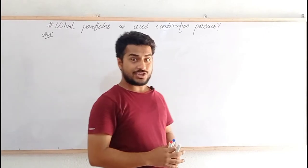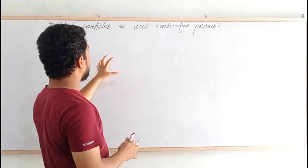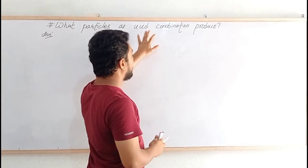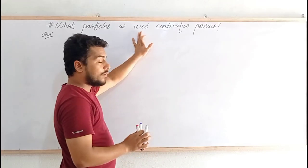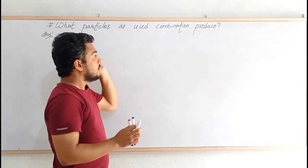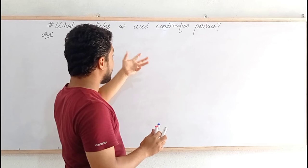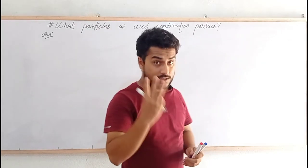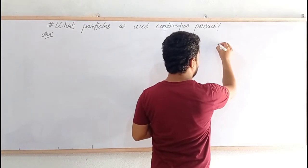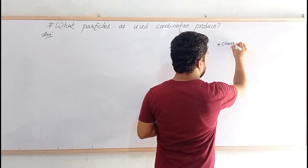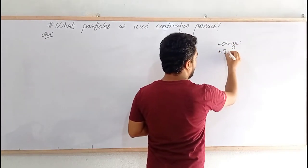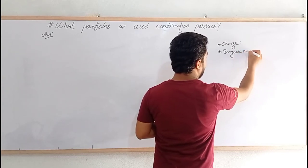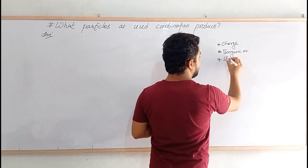So, we have a question over here. What particle is the UUD combination produced? Here, UUD represents up quark, up quark, and down quark. To find the particle which is formed due to this combination, we have to know three things: total charge, baryonic number, and strangeness.